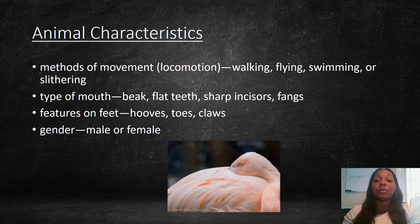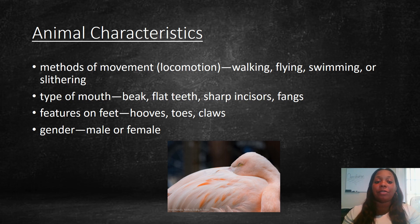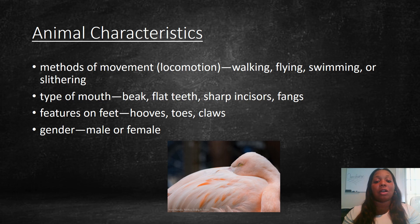We also group animals by methods of movement — walking, flying, swimming, or slithering — types of mouth — beak, flat teeth, sharp incisors, or fangs — features on feet — hooves, toes, and claws — and their gender, whether they are male or female.